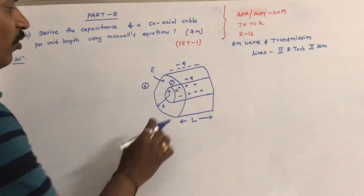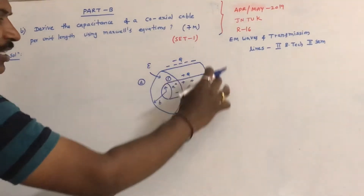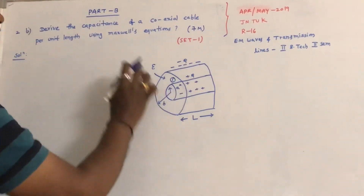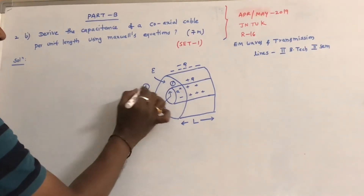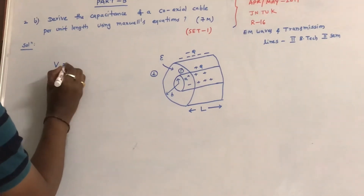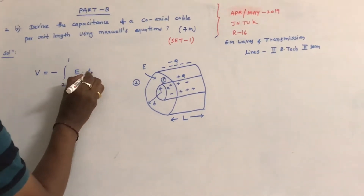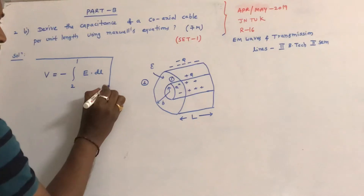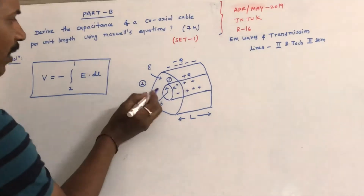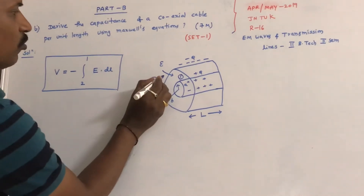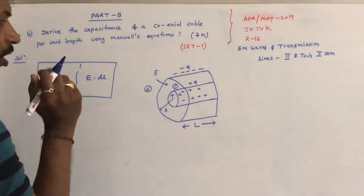Since two conductors are separated by a dielectric material, this arrangement forms a capacitance, called the coaxial capacitance. The potential difference between conductors 1 and 2 is mathematically given as V = -∫(from 2 to 1) E · dL. We integrate from 2 to 1 because the electric field goes from positive to negative charge, so we are doing work against the electric field.